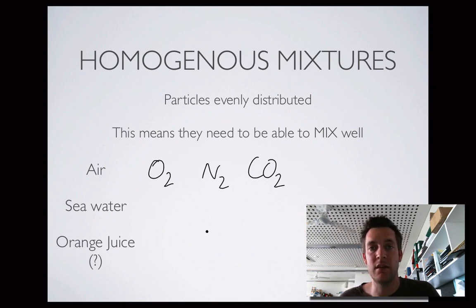But if you've got bits in it, then there's an uneven distribution of particles. There'll be bitty parts of the orange juice and there'll be not bitty parts. So, depending on what kind of orange juice I've got, it might be homogeneous if it's smooth, but if it's not smooth, if it's got bits in it, then it's not an evenly distributed mixture.